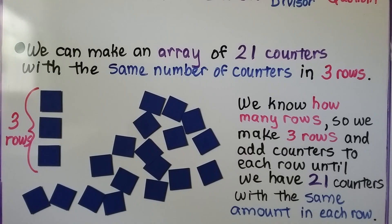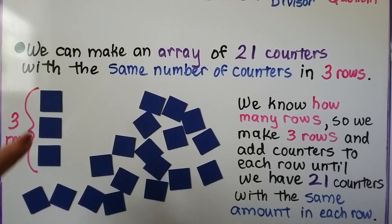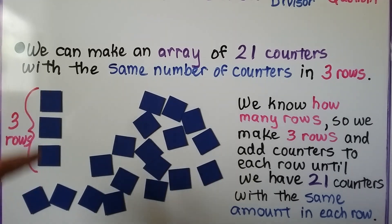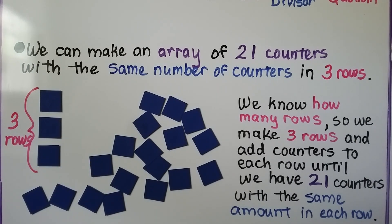We can make an array of 21 counters with the same number of counters in 3 rows. We know how many rows we're supposed to have — there are 3 of them. We add counters to each row until we have 21 with the same amount in each row. We don't know how many are in each row; we only know we have 3 rows. So let's make a column for row 1, row 2, and row 3.